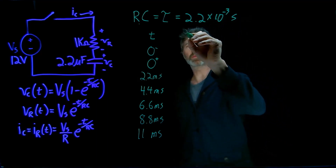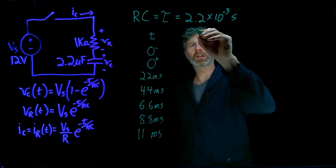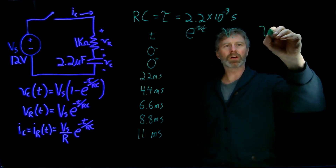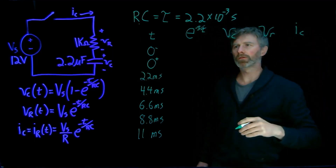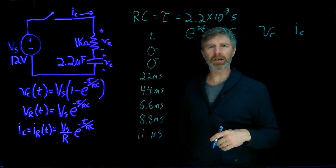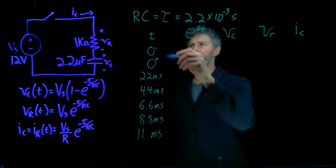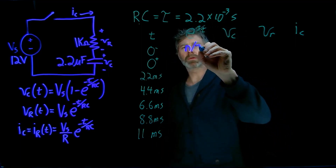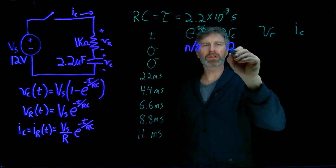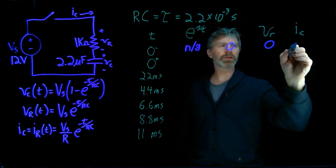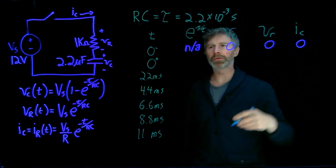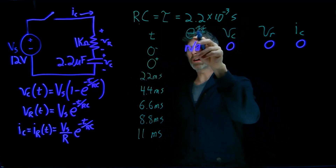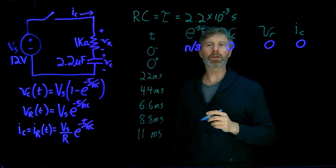For each one of these times, we'll figure out e to the negative t over tau, and then we'll also figure out Vc, Vr, and Ic for all of these different times. It's just a matter of plugging numbers into a calculator. At the instant before the switch closes, the time constant is not applicable because we're not charging the capacitor. The voltage across the capacitor starts at zero, the voltage across the resistor is zero, and the current through the devices is also zero. At the instant the switch closes — time zero plus — these equations apply and the e to the negative t over tau applies.